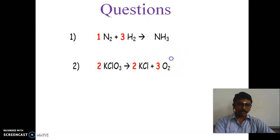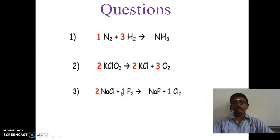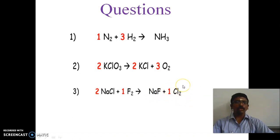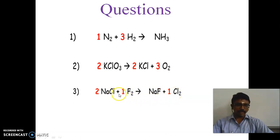Next question: 2 molecules of NaCl - sodium chloride - plus 1 molecule of F2, fluorine, gives NaF - sodium fluoride - plus 1 molecule of Cl2, chlorine. So sodium chloride plus fluorine forms sodium fluoride plus chlorine. The reactants are sodium chloride and fluorine, and the products are NaF and Cl2.